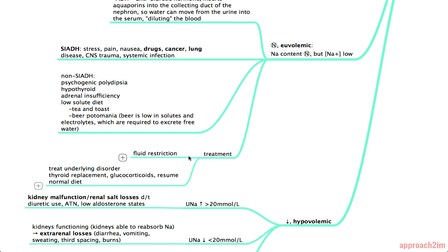Now for euvolemic conditions your treatment is again fluid restriction. And then also treating the underlying disorder. So replace the thyroid hormone or give glucocorticoids if they're deficient. And resume a normal diet if they have the tea and toast or beer potomania.